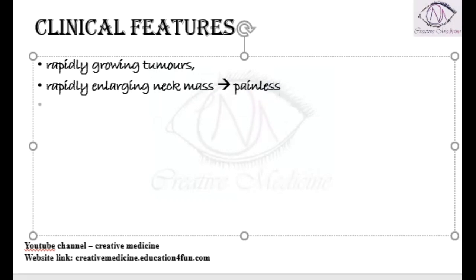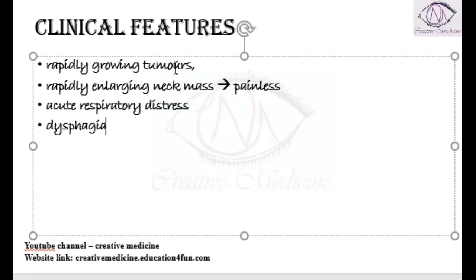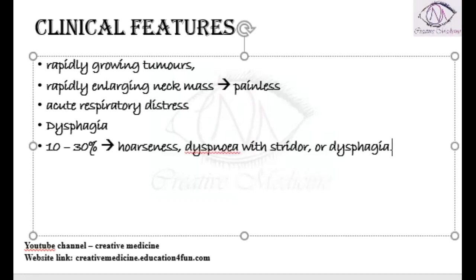The patient will also present with acute respiratory distress and dysphagia. The acute respiratory distress is because of compression when the lymphoma compresses the trachea. Dysphagia occurs when the lymphoma compresses the esophagus. In 10 to 30 percent of patients, hoarseness of voice may be seen, mainly because of the involvement of the recurrent laryngeal nerve. The patient might also present with dyspnea with stridor due to compression of the thyroid.